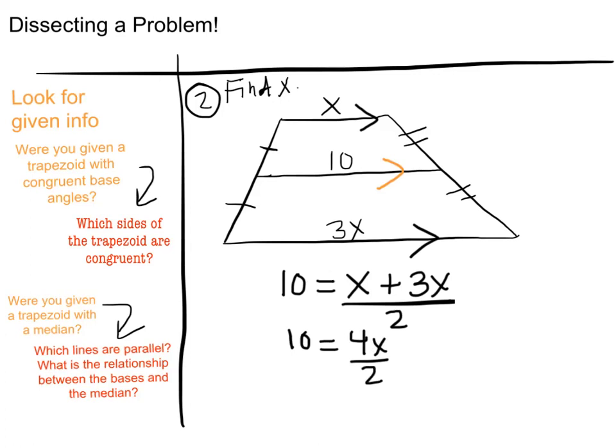I get that by combining like terms. 4x divided by 2 is 2x. I'm going to move over here. So I get 10 equals 2x, divide by 2 on both sides and I get x is equal to 5.